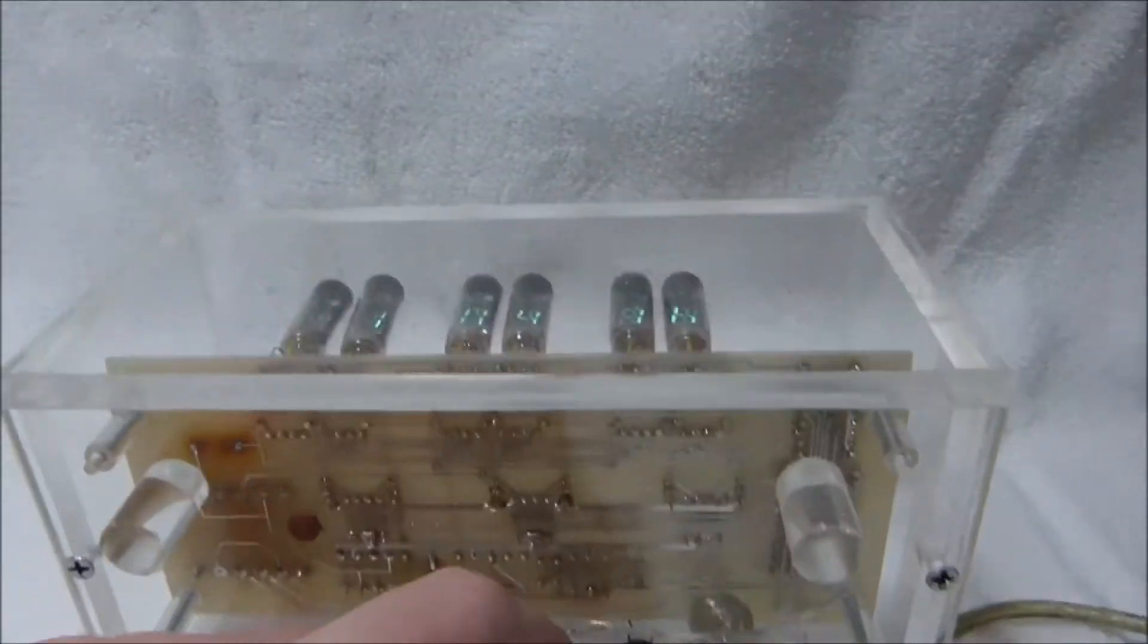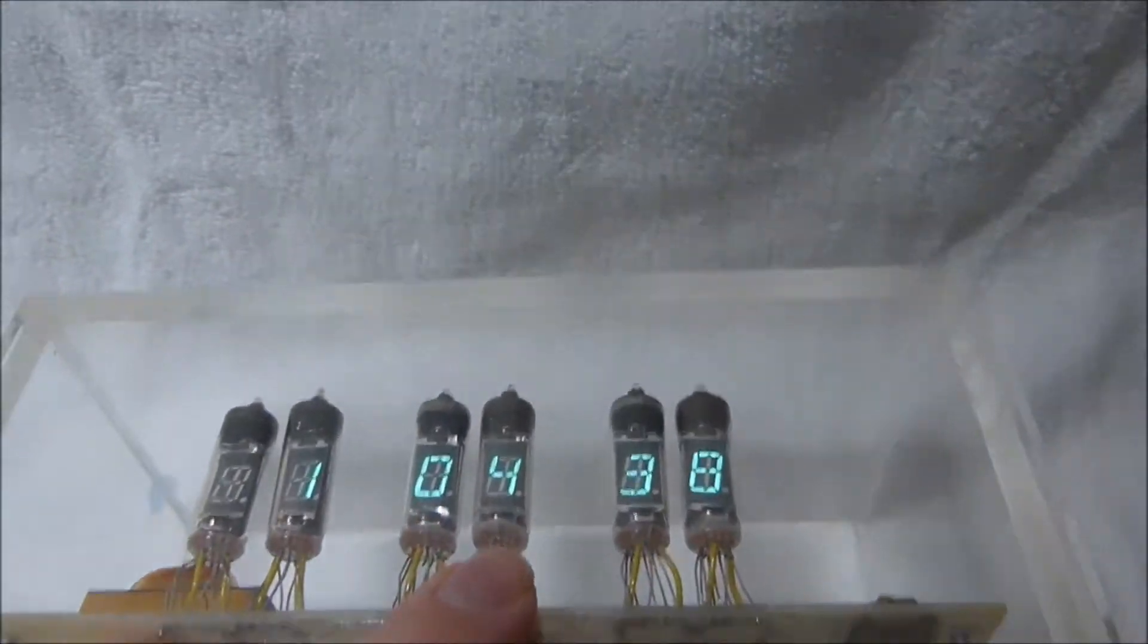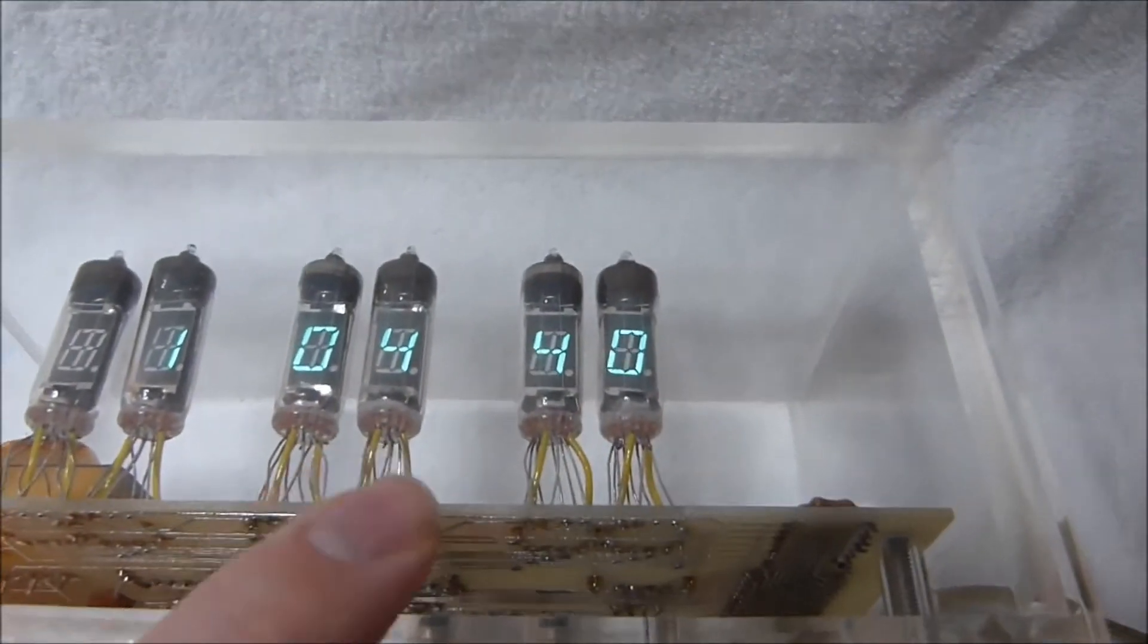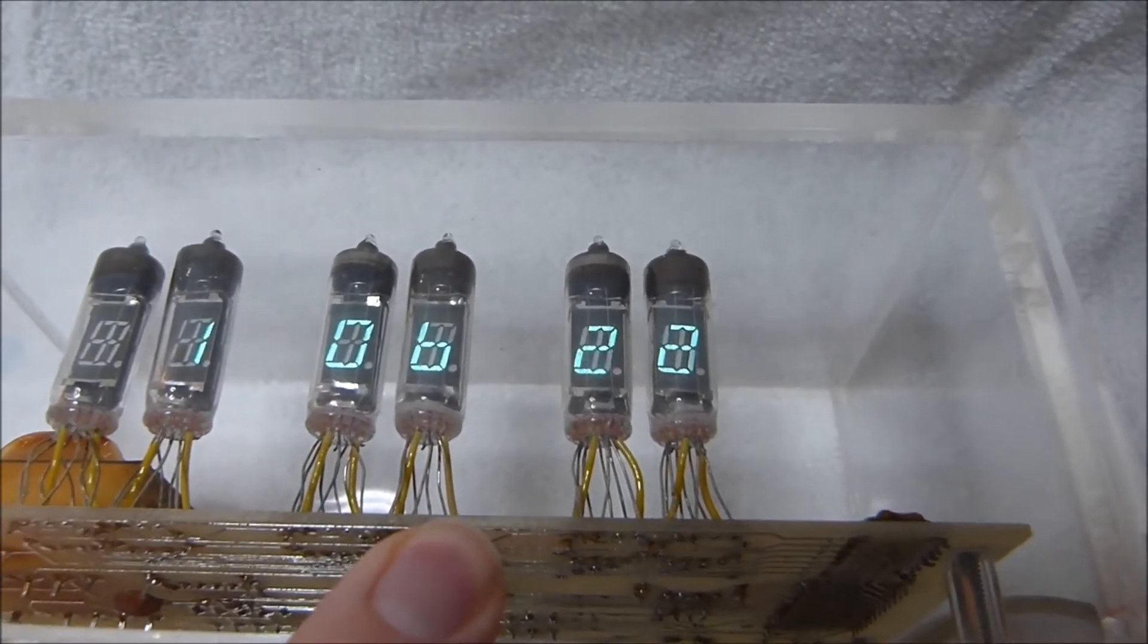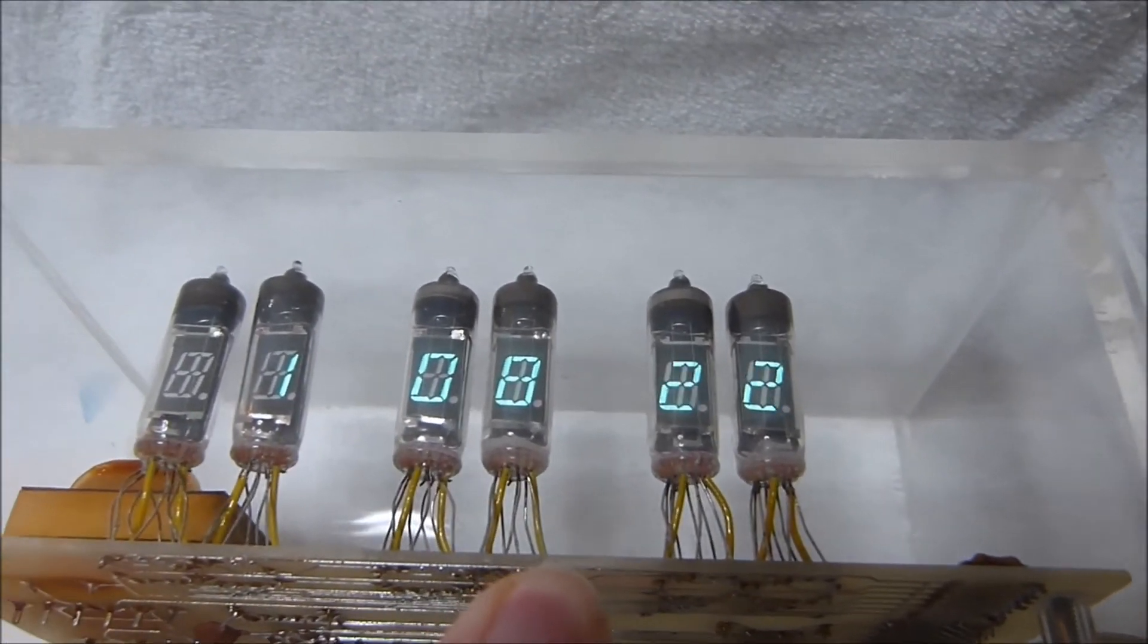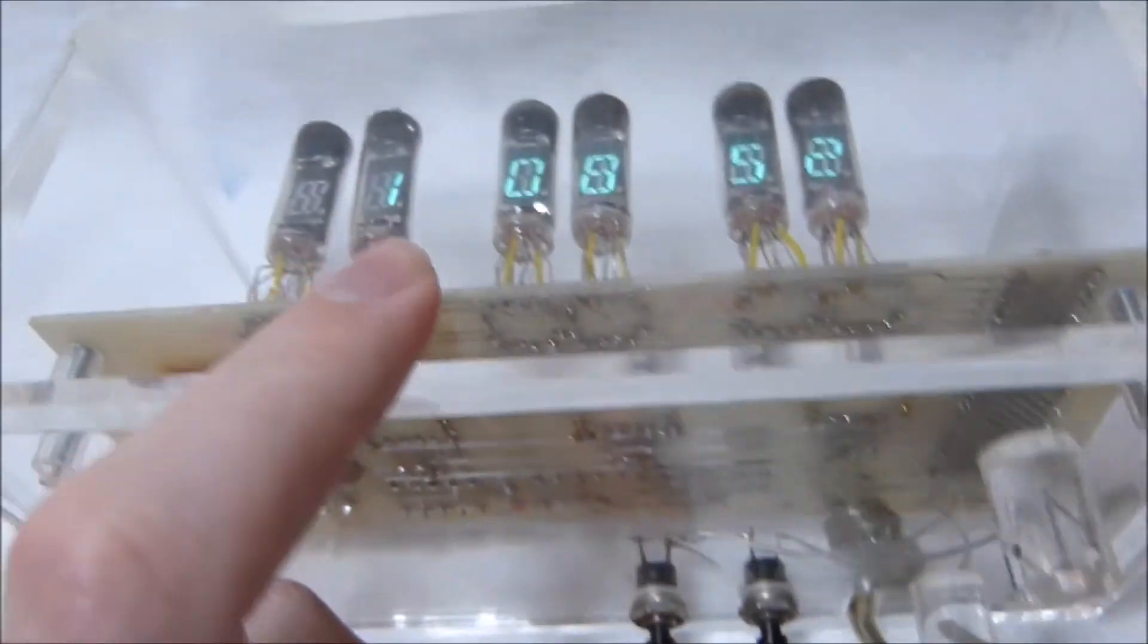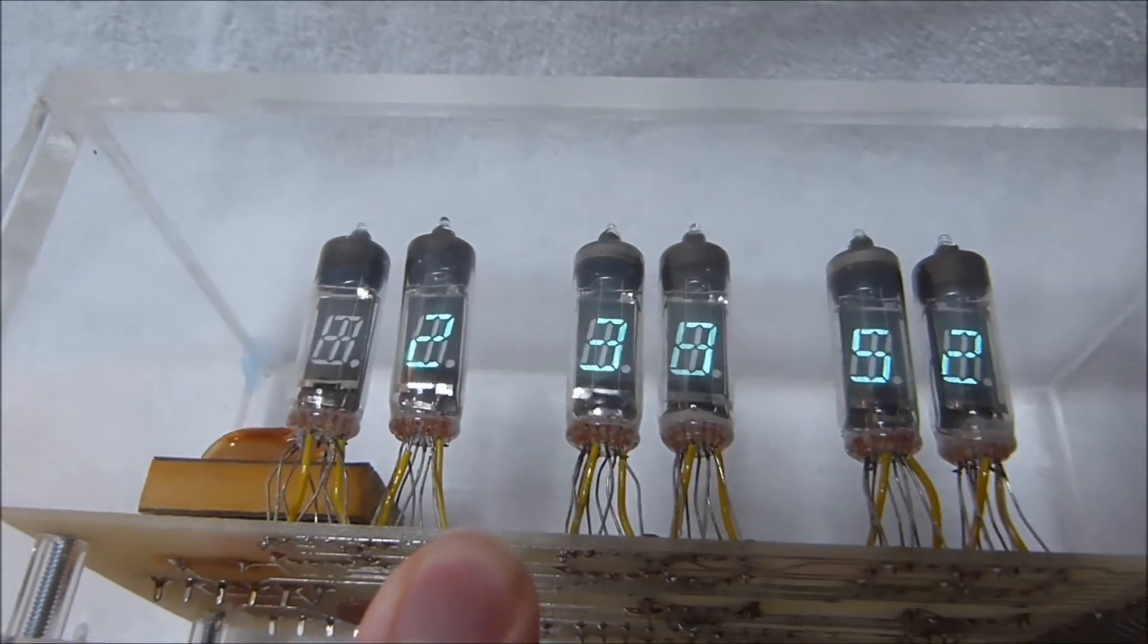Now on the bottom here are two buttons. This one here is the slow set, which rapidly advances the seconds. Next to it is the fast set, which rapidly advances the minutes.